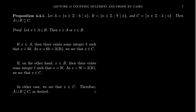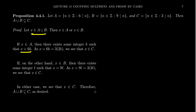Here's how the proof proceeds. We want to show that A union B is a subset of C. Start with X as a member of A union B, so X belongs to A or X belongs to B. Consider the first case: if X belongs to A, then there exists an integer K such that X equals 6K. Now, 6 can be factored as 3 times 2, so X equals 3 times 2K. Since 2K is an integer, this is 3 times an integer, which shows that X belongs to C.